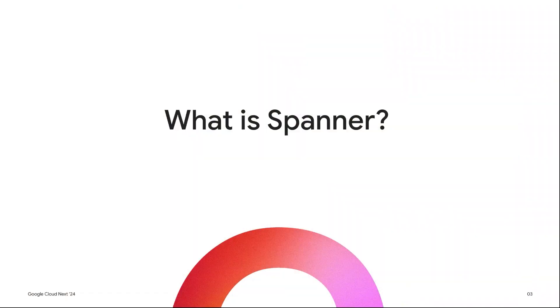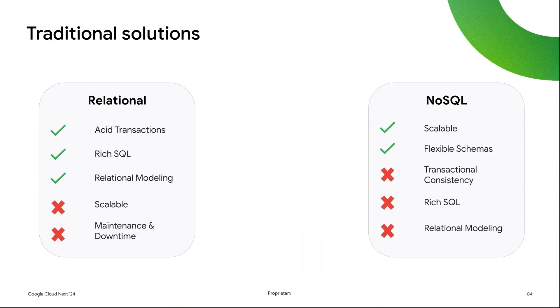Today we're going to be talking about Spanner, an in-house developed database that is widely used both within Google and across our cloud customers. Let's start by discussing why we built Spanner and what problems it is uniquely positioned to solve. Spanner was born out of the gaps of technology in the database market. Traditional relational databases offer easy-to-use and powerful primitives with transactions, SQL, and relational schemas.